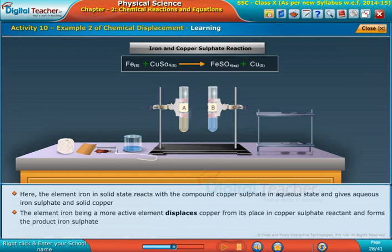The element iron being a more active element displaces copper from its place in copper sulfate reactant and forms the product iron sulfate.